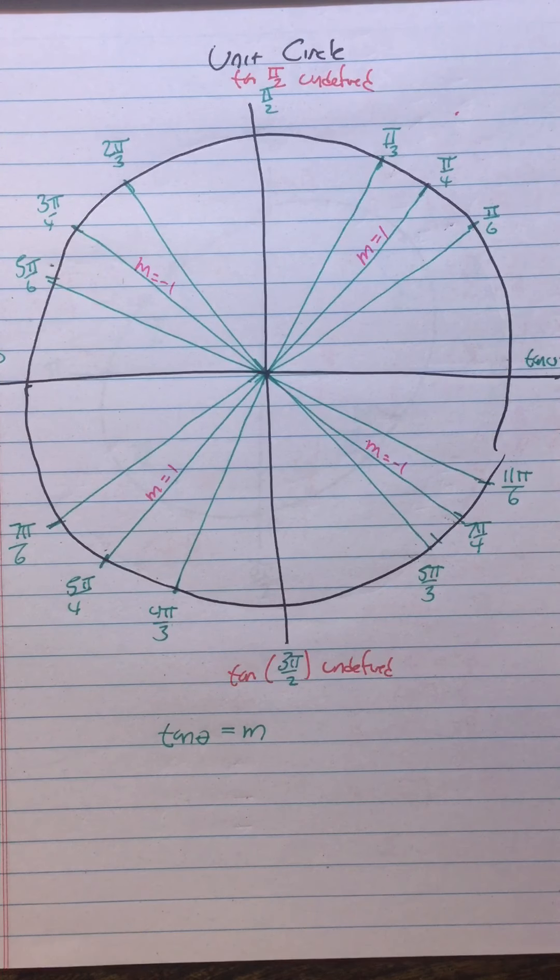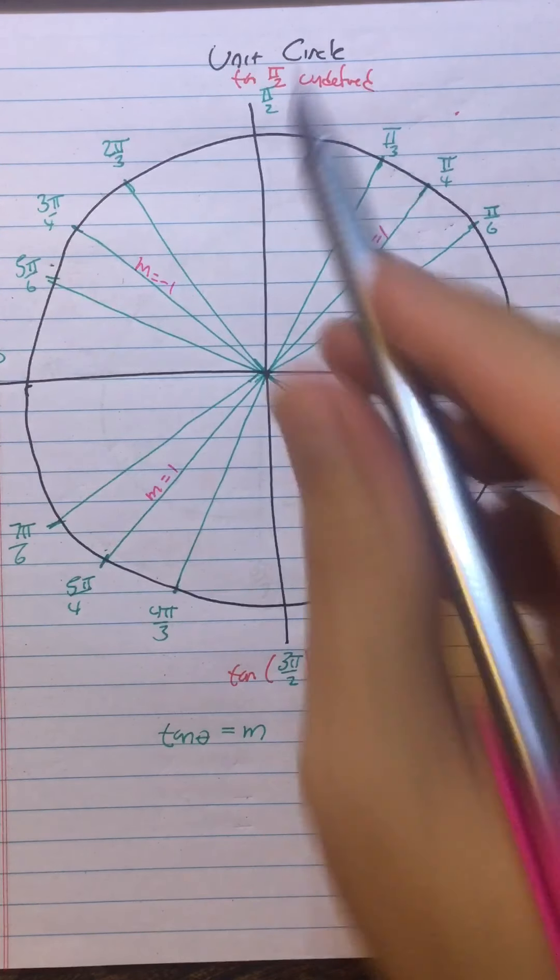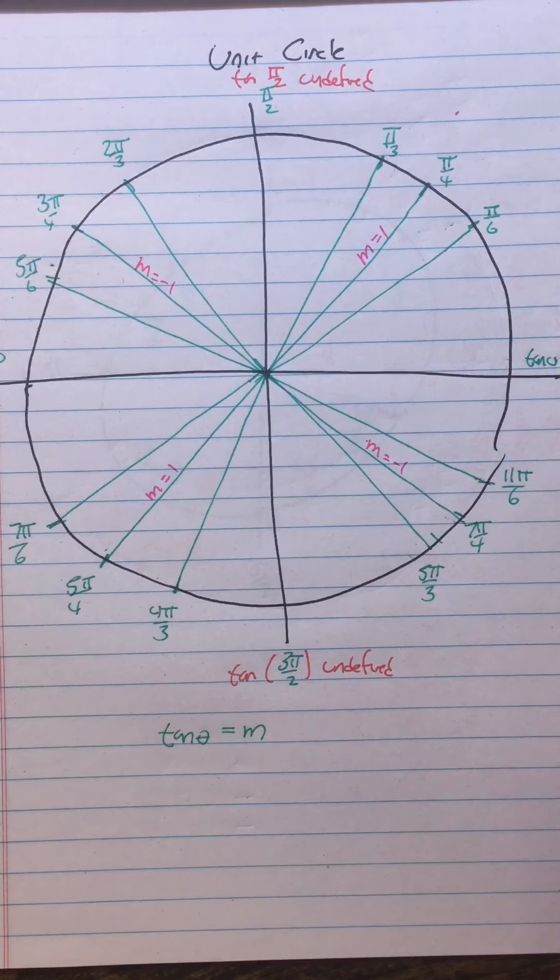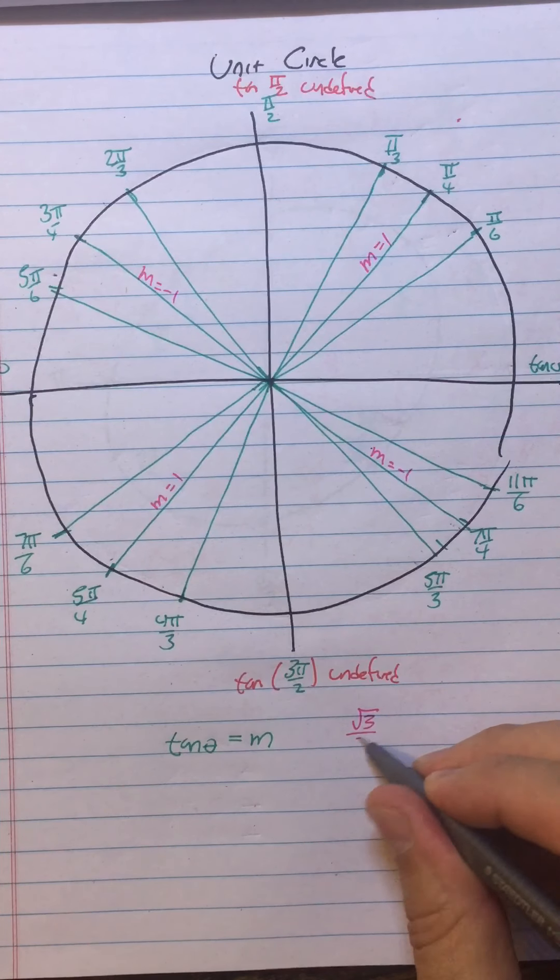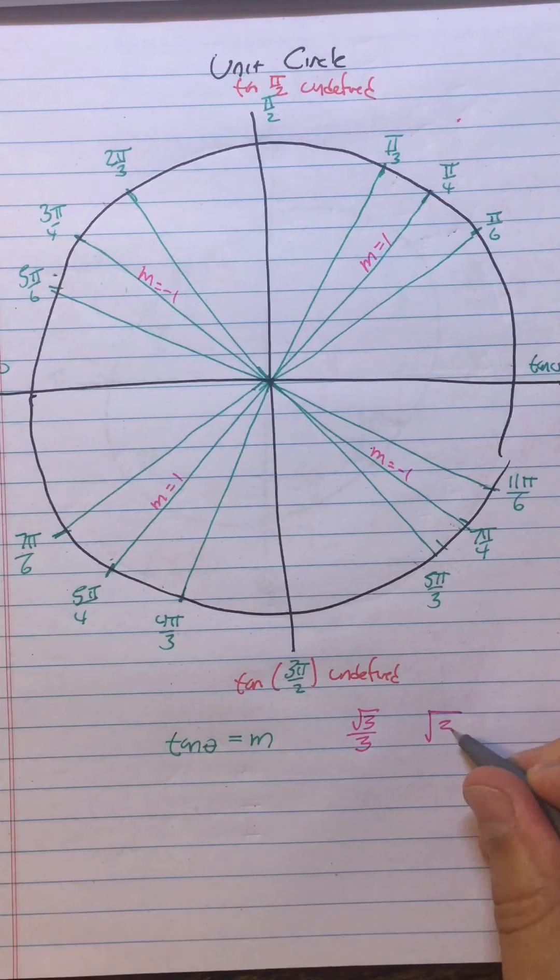Now here's the next one that's cool. There are only two other possible values for tangents that we haven't got. So your tangents are all going to be either 1, 0, or undefined, except for two other numbers. So the two other numbers that you need to know are √3/3 and √3.